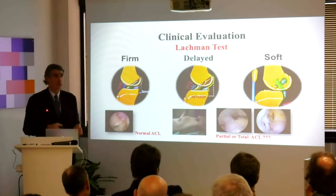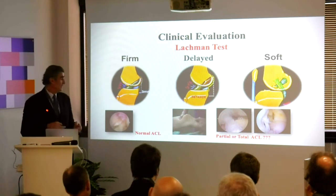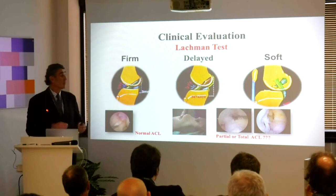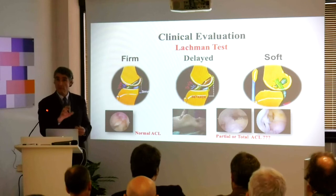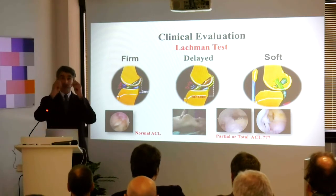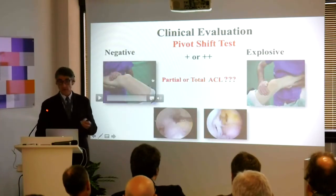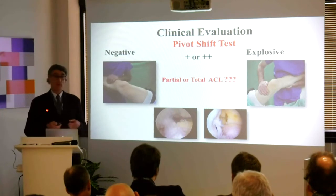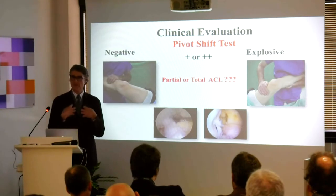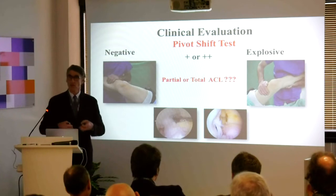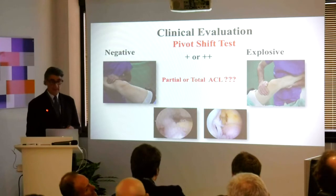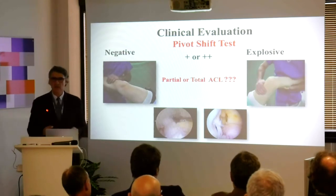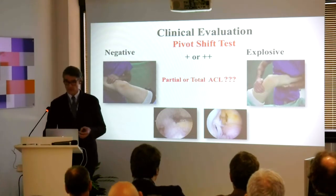The clinical evaluation is simple. We all know the Lachman test — firm, delayed, soft — which gives you an evaluation of whether you have a normal ACL, a partial ACL, or a complete tear. In partial tears, sometimes you have a partial that is functional and sometimes one that is not functional, and you will treat them probably differently. The pivot shift is of course important, but difficult to test — I see that with fellows and residents. When you ask them to do the pivot shift, sometimes you have an explosive one and the fellow will miss it. You should learn and know how to do it. A pivot shift of one-plus is very different from one where you have something like a knee dislocation — you cannot treat those two patients the same way.